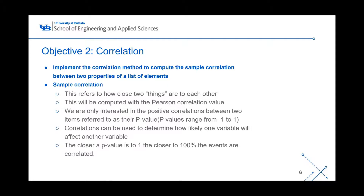For this assignment, we're only interested in positive correlations between two items, referred to as their p-value. P-values range from negative one to one, and we're really only worried about the positives. Correlations can be used to determine how likely one variable will affect another, like electricity compared to gas and water usage. The closer the p-value is to one, the closer to 100% the events are correlated, or basically likely to happen together.